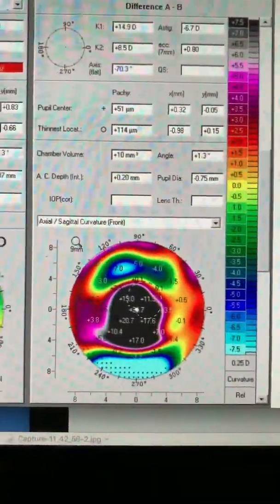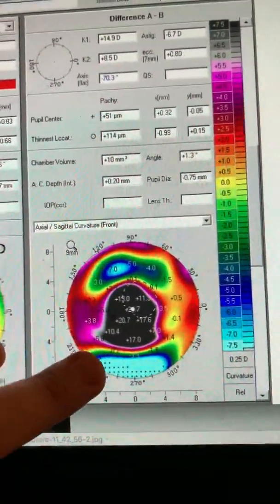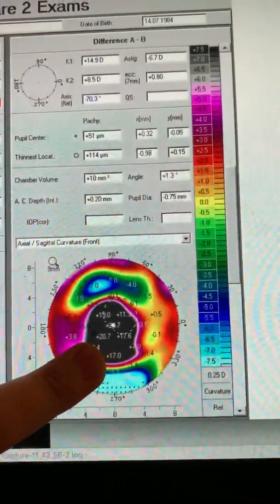And this is a difference map, which I wanted to share with you. We can see a dramatic flattening of over 20 diopters here.